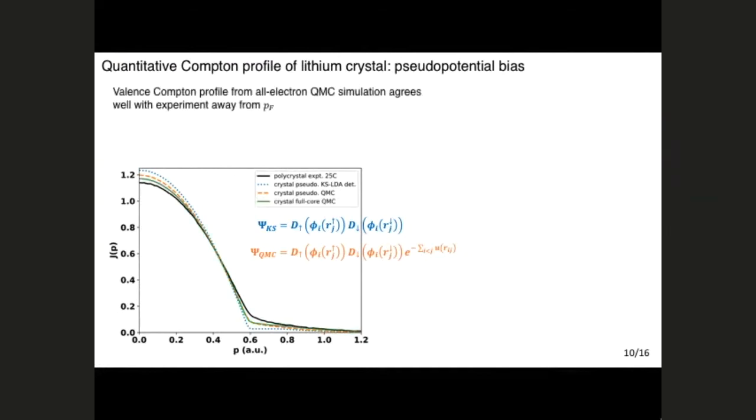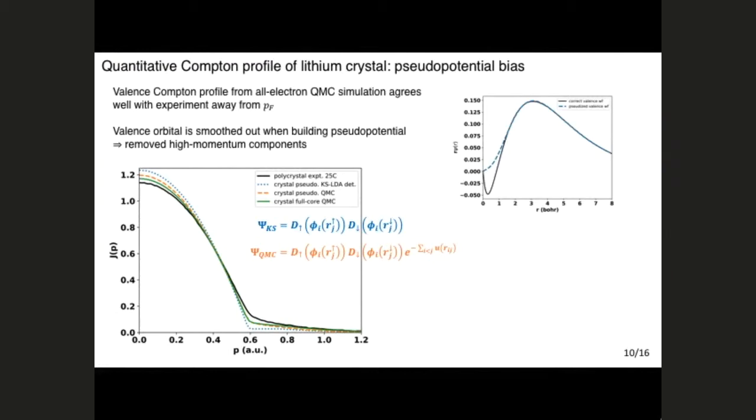Now, what happens if you do an all-electron calculation, which is shown as the green line here, is that you fix up this large k behavior, and you also agree much better with the experiment down here. So this is rather easy to understand just from the construction of the pseudopotential, because what we do when we construct a pseudopotential is that we take a valence orbital, shown as the black line here, that has this wiggle. We smooth it out to construct the pseudo-wavefunction and the pseudopotential. So of course, because you're throwing out this wiggle, you're throwing out some large k behavior or short-range, you're throwing out the short-range feature of the Compton profile. So you really need to use an all-electron calculation, do some sort of correction to try to match the experiment.